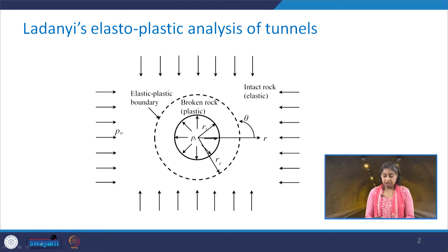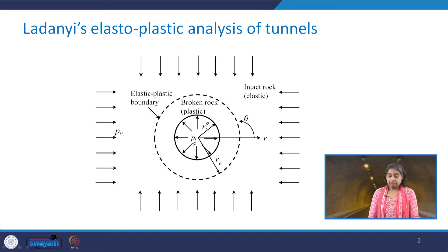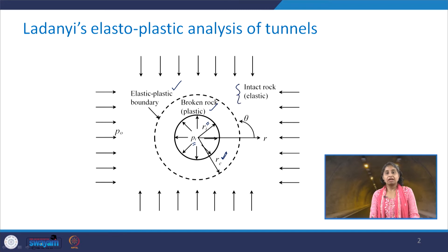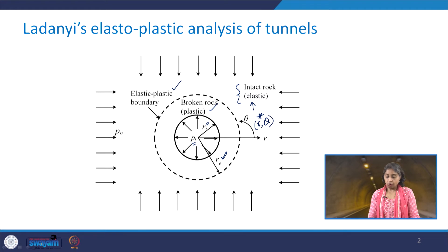Just to recall, this is the geometry of the problem, where you have the excavation having radius r_i and it is subjected to internal support pressure p_i. There is going to be the broken rock zone in the vicinity of the tunnel, then the elastoplastic boundary with radius r_e, and beyond that the rock is considered to be intact rock which will behave in an elastic manner. Any point in the rock mass here will be represented by r, theta. Let us start with the analysis.